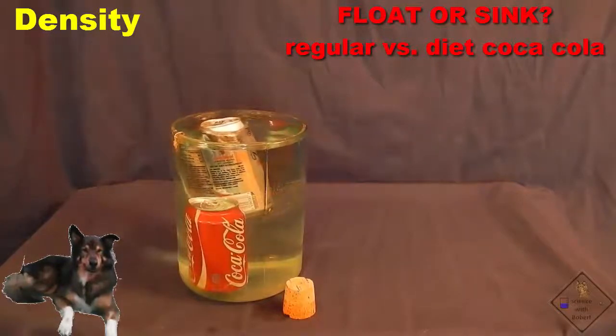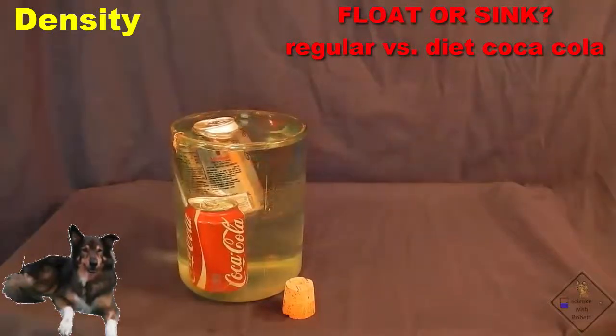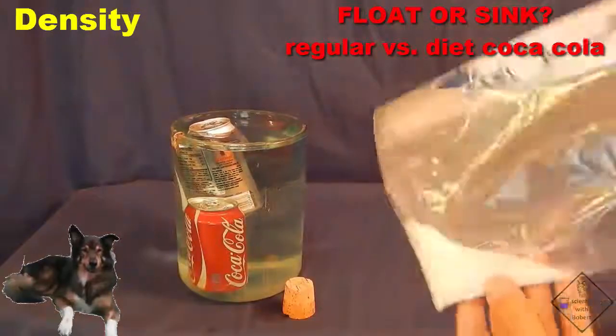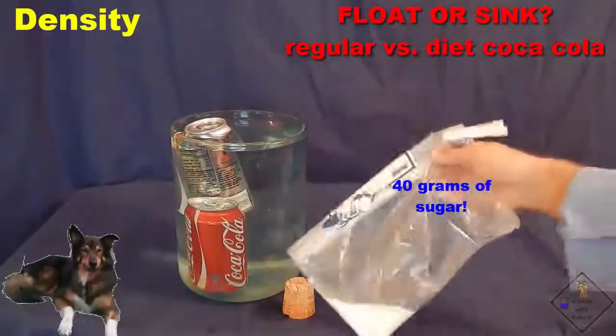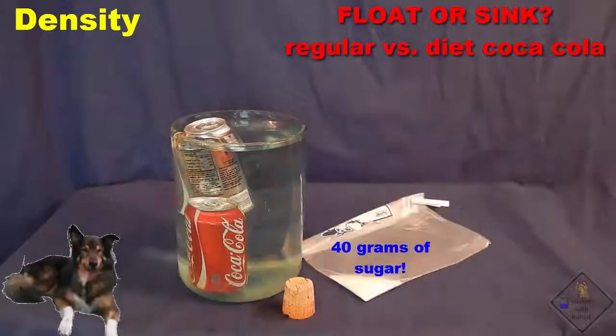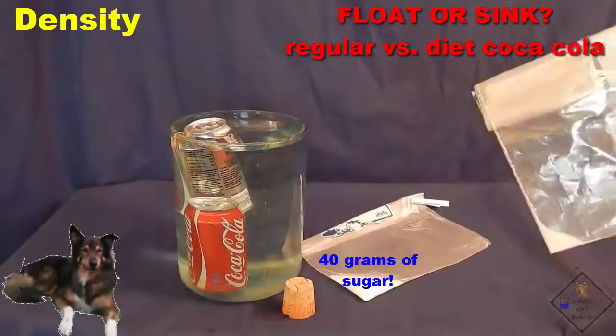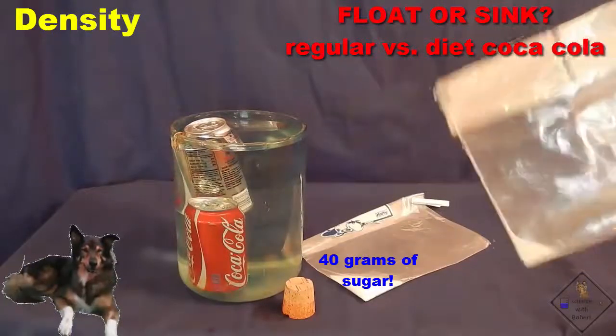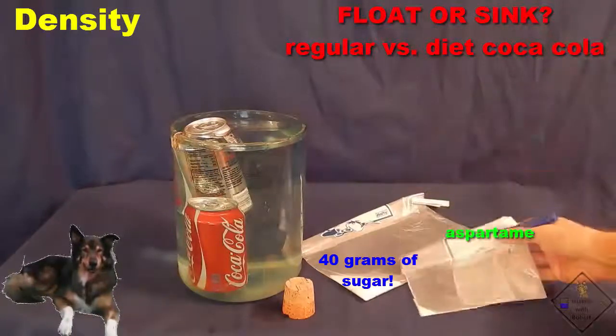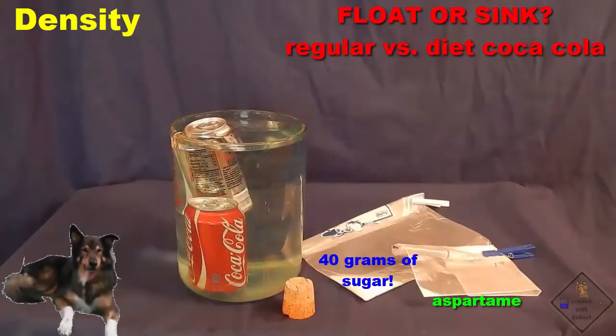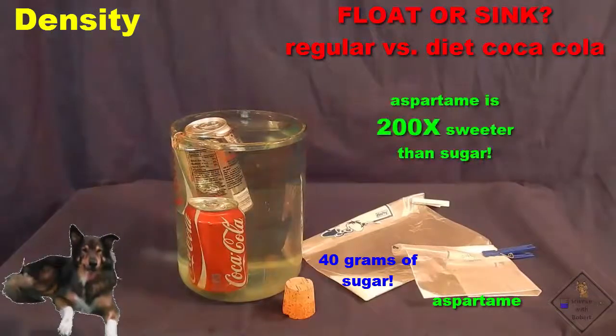It is because even though their volumes are the same, their masses are different. Regular Coke contains 39 grams of sugar. This 39 grams is not in the can of Diet Coke. Instead, Diet Coke contains only a small amount of aspartame, an artificial sweetener. In fact, aspartame is 200 times sweeter than sugar.